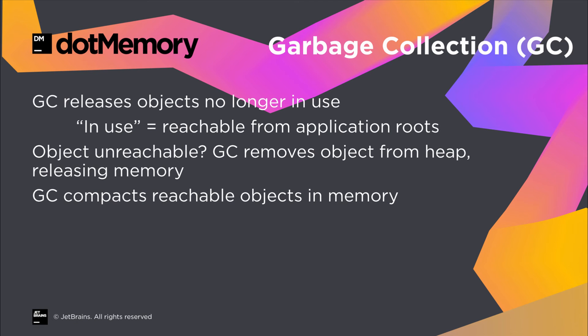When an object is out of scope, it will still be in memory, but no references should be pointing to it anymore. Every now and then, the garbage collector will check for such objects and remove them from the heap, effectively releasing the memory again. And just like we sometimes have to defragment our hard drive, the garbage collector will also make sure reachable objects are not too spread around the managed heap.